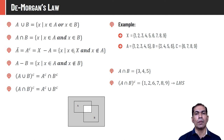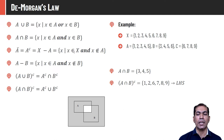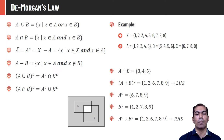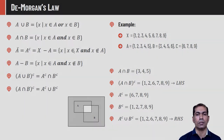The second De Morgan's Law: (A ∩ B)' = A' ∪ B'. Left-hand side: A ∩ B = {3,4,5}, complement = {1,2,6,7,8,9}. Right-hand side: A' = {6,7,8,9}, B' = {1,2,7,8,9}, A' ∪ B' = {1,2,6,7,8,9}. LHS equals RHS, so De Morgan's Law holds for this property as well.